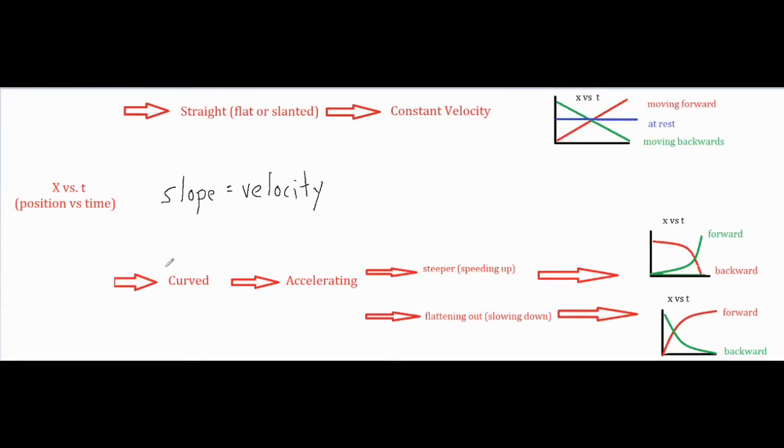Now if you have a graph that's curved, that means your slope is changing. Therefore, your velocity is changing. So if your velocity is changing, you would call that accelerated motion.